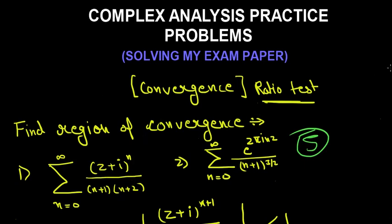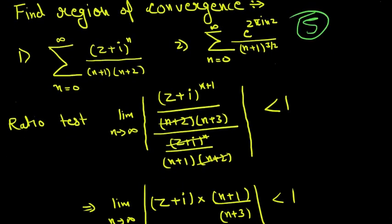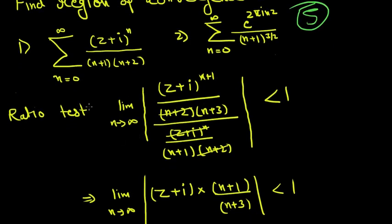We use the ratio test here - it's really easy. Just change n to n+1, so n+1 becomes n+2 and n+2 becomes n+3, divided by the same term. The series will converge when this whole thing is less than 1 when we take the limit as n approaches infinity.